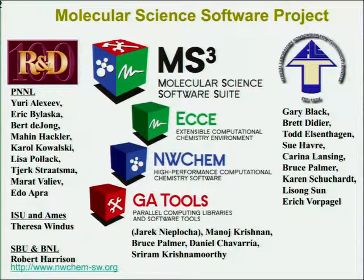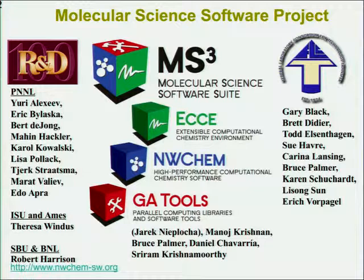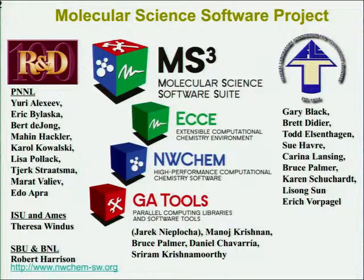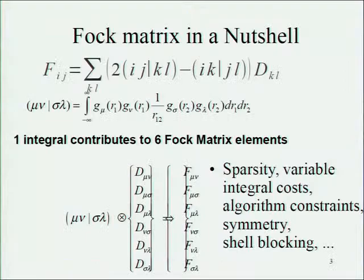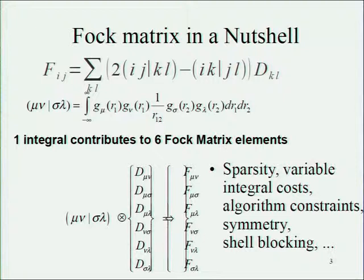Sanjay mentioned NWChem. NWChem was an effort at Pacific Northwest lab that sits under the molecular science software suite banner. It had three components — NWChem itself, but the particularly interesting piece is the global array library, which solved the parallel programming challenge of its era for that particular class of applications. There are of course big caveats to bear in mind there. There are some rendering issues with PDF on this machine, but one of the motivating applications was the computation of the Hartree-Fock wave function.